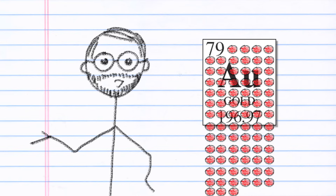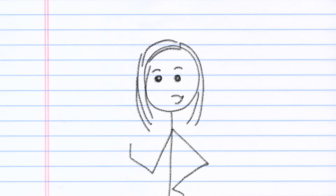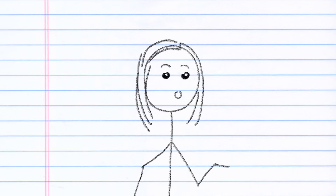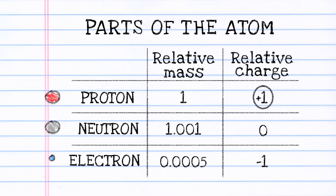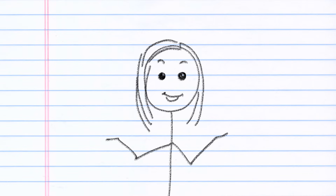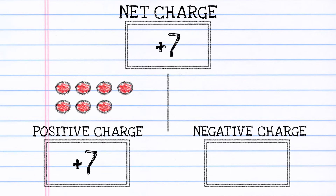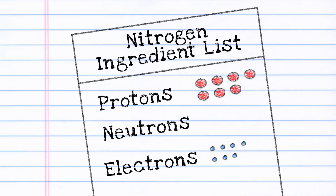If you want to know which element an atom is, count the protons. Now that we know that an atom of nitrogen has 7 protons, finding the number of electrons is easy. Overall, atoms are electrically neutral. Protons, though, carry a positive electrical charge. How can an atom of nitrogen be neutral if it contains 7 positively charged protons? Because electrons carry a charge that's equal in size to the protons, but opposite in sign. If an atom of nitrogen is neutral and it contains 7 positively charged protons, then it must contain 7 negatively charged electrons. In short, for an atom, the number of electrons is also equal to the number of protons.